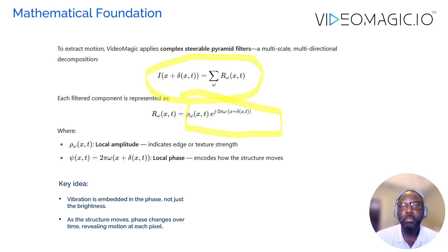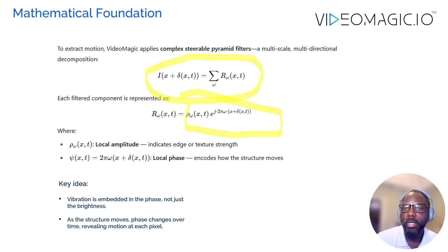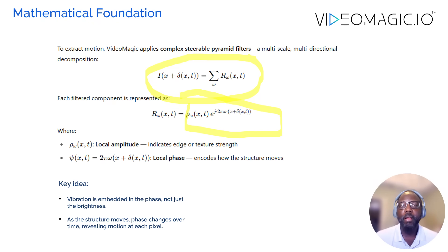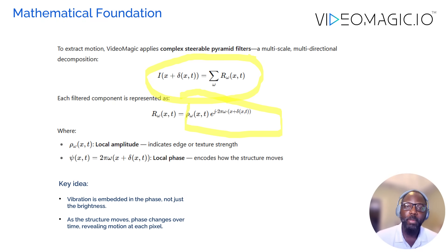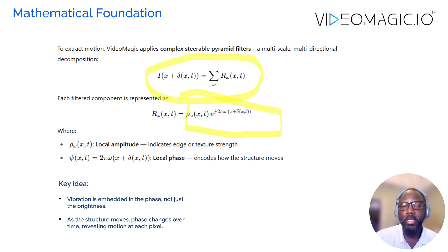This is where the magic happens. When the structure moves even a few microns, the brightness of the pixel barely changes, but the phase shift is noticeable — the pixel actually changes position. So instead of just looking at pixel brightness, we focus on how the phase changes between frames. The phase change can be extremely sensitive to small or subtle movement, and this is what makes Video Magic a very strong technology — we are able to detect changes that can never otherwise be seen by the naked eye.